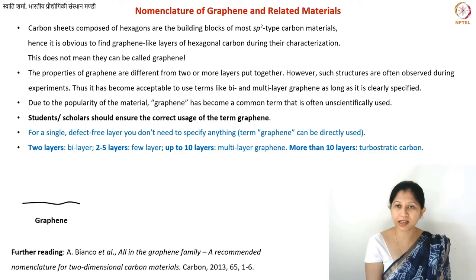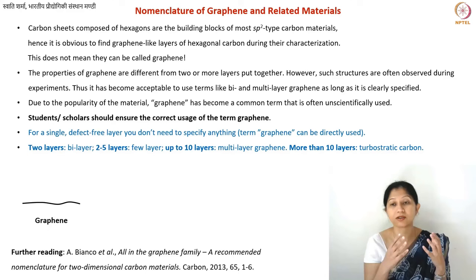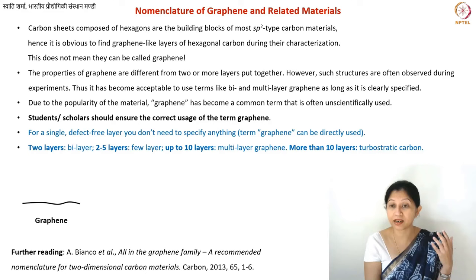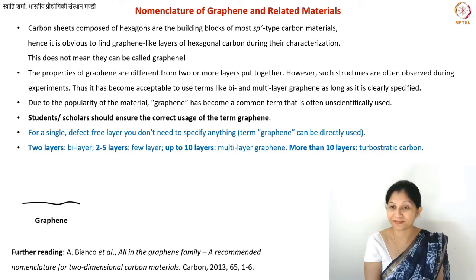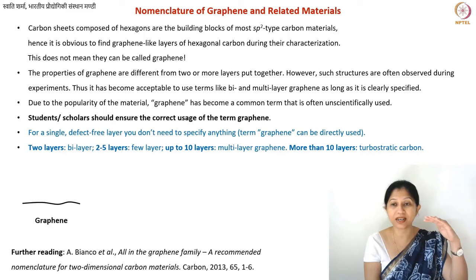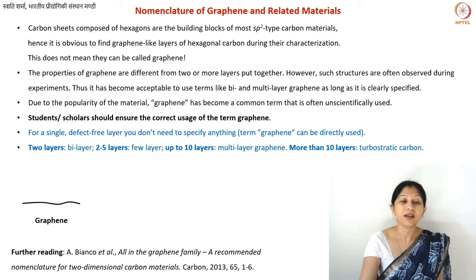When it comes to defects, defect-containing graphene has become a very common term. Graphene is a single layer defect-free structure, but if you have some defects — and I will talk about commonly found defects in a later lecture — sometimes defects induce very special properties. If you have well-controlled or intentionally induced defects, it's acceptable to call it defect-containing graphene. But if you unintentionally got a lot of defects, that material might not be graphene at all. And the single layer condition still applies.